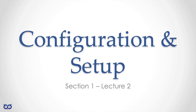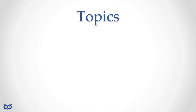Welcome to lecture two in section one. In this lecture we'll go through what you need to do to configure and set up the tools that we installed in the previous lecture, so that in the next section we can start writing code. We're going to be talking about Go artifacts — your Go source files, packages, and executables — and we'll talk about how you get those.